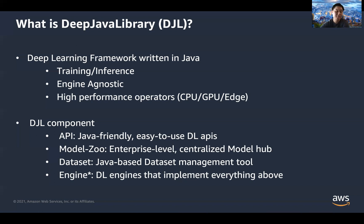Deep Java Library also has a very concrete model zoo design, built to an enterprise level. It has multiple ways for users to handle encryption and manage different models with their different versions. Users can build a centralized model hub that can be served anywhere using the Deep Java Library model zoo components.